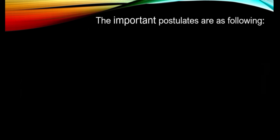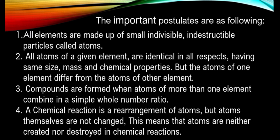Number one: all elements are made up of small, indivisible, indestructible particles called atoms. Number two: all atoms of a given element are identical in all respects, having the same size, mass, and chemical properties, but the atoms of one element differ from the atoms of other elements.